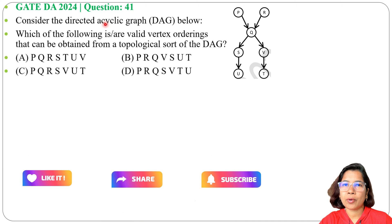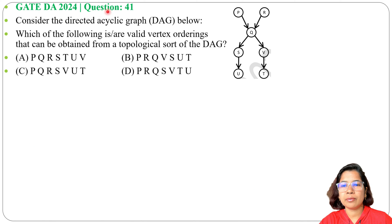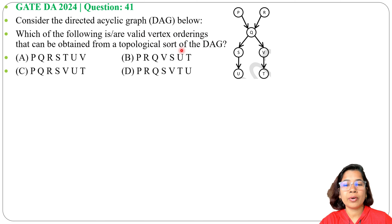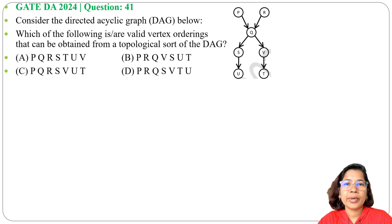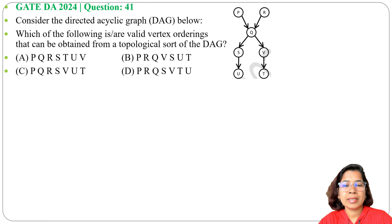Let's solve a previous question on topological sort. This question was asked in GATE 2024, question number 41. Consider the directed acyclic graph (DAG) below. You can find topological sort in two ways: one is by using DFS, another is the source removal method. In case of DFS, according to finishing time we will write the topological sort.